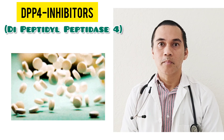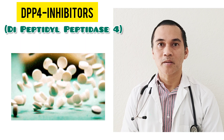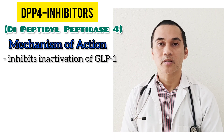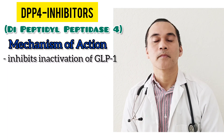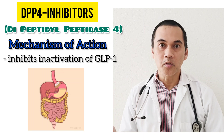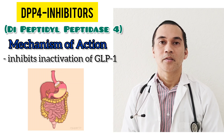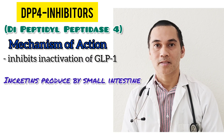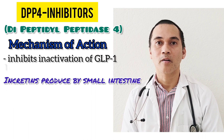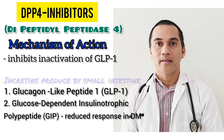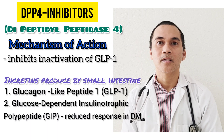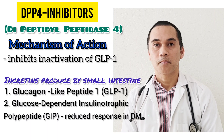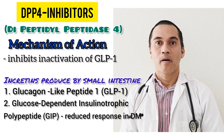Let's talk first about DPP-4 inhibitors. This class of diabetic medication will inhibit the inactivation or degradation of GLP-1. When we eat, when the nutrients reach the small intestines, there are epithelial cells that secrete incretins. We have two incretins: the glucagon-like peptide one, and the glucose-dependent insulinotropic polypeptide, or GIP.